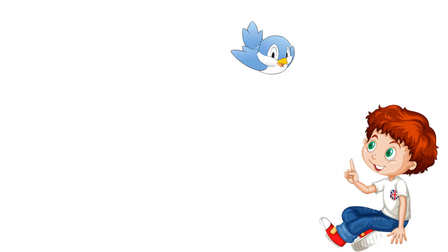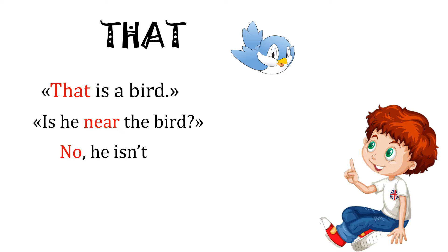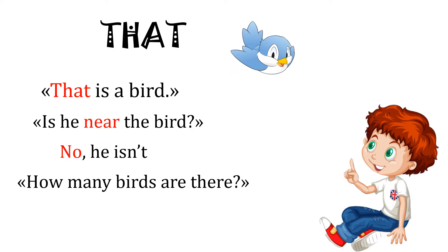What about this bird? That. 'That is a bird.' Is he near the bird? No, it's far — he isn't near the bird, he is far. And how many birds are there? One. So, if I have only one and it's far, I use 'that.'